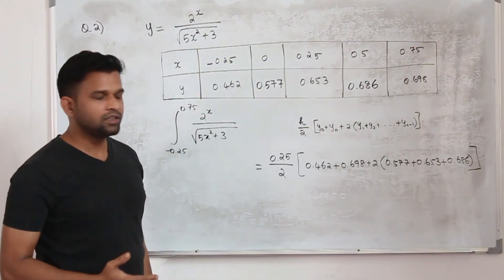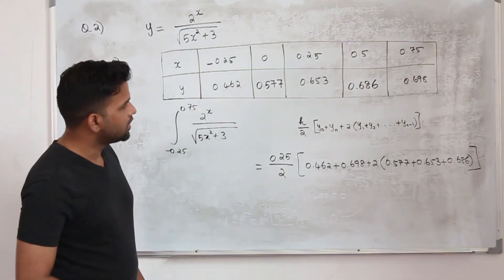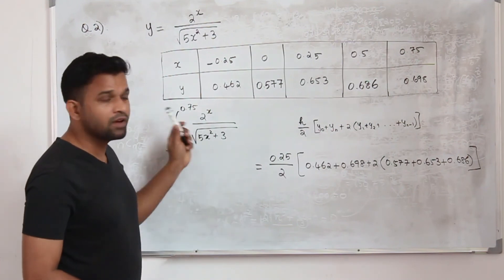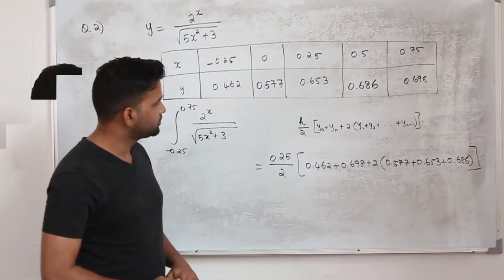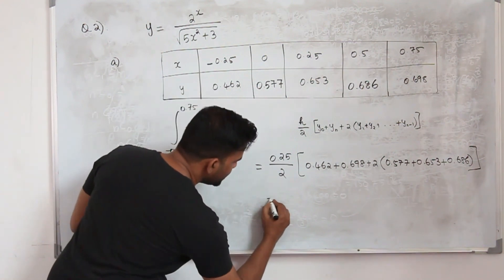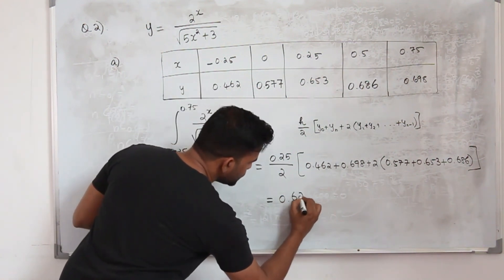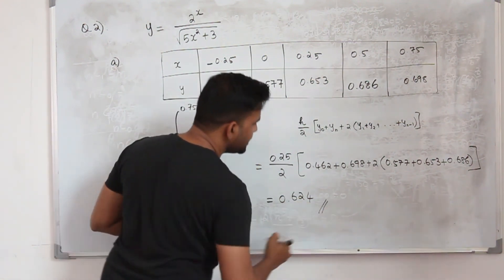That's it, just calculate this and you got the approximate value of this integral already. So the value of this is 0.624, that's the answer.